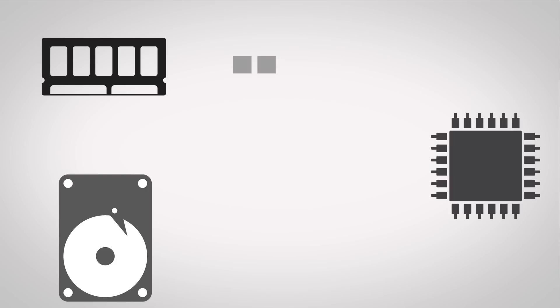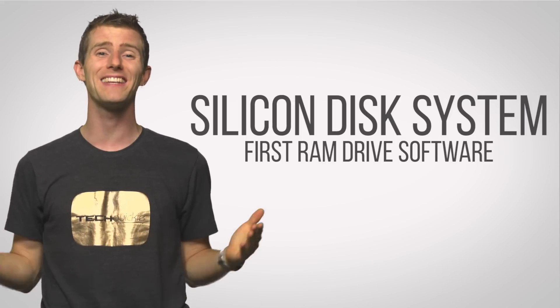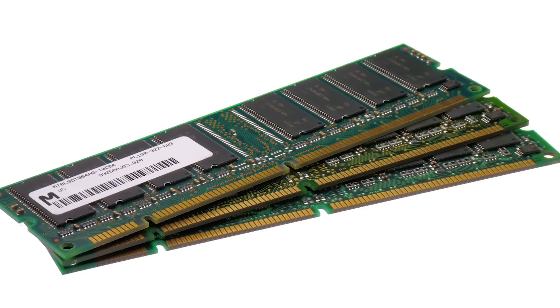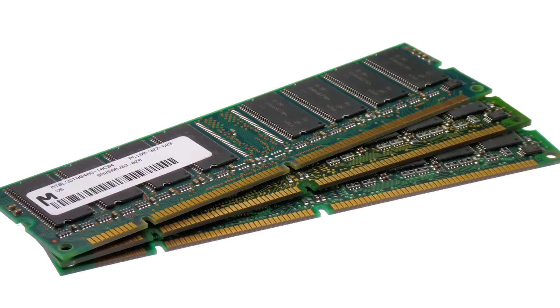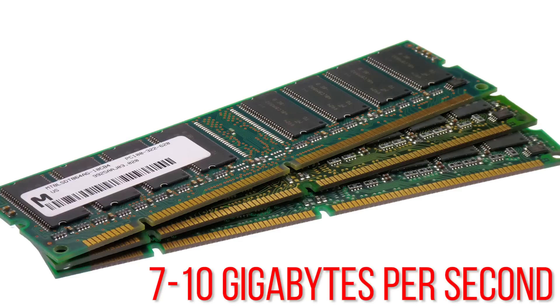This allows the computer to read and write the data that it needs to act upon without having to wait around. And this paradigm has existed since long before long-term solid state storage became mainstream. In fact, the first RAM drive software came about all the way back in 1980. So just how fast are we talking about? Well, depending on your configuration, you can get sequential read and write speeds in the neighborhood of 7 to 10 gigabytes per second or more.